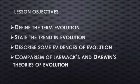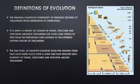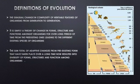Let's start with definition of evolution. What is evolution? My first definition here will tell you that evolution is the gradual change in complexity of hereditary features of organisms from generation to generation. It's saying that there is a change in the form and complexity of organisms from generation to generation.